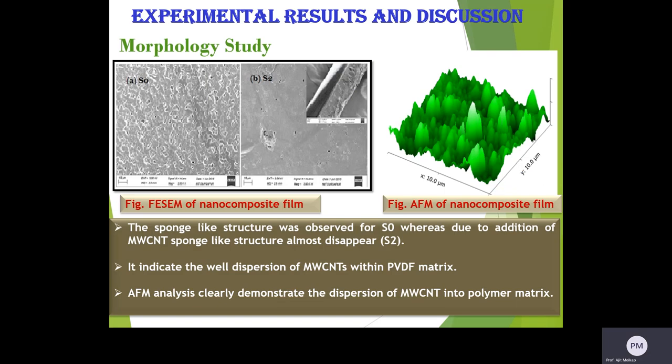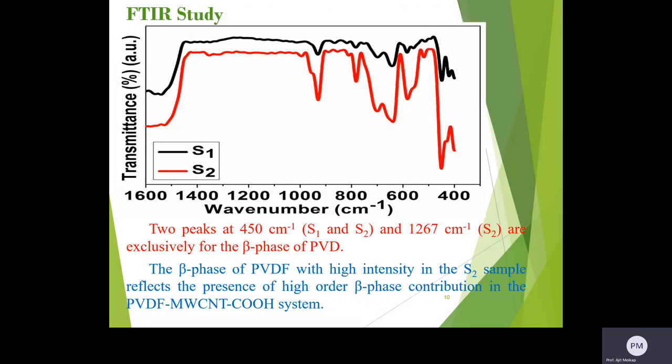Morphologies of the films are described here. The sponge-like structure has been observed for pure PVDF, whereas due to addition of MWCNT, sponge-like structure almost disappeared. AFM analysis clearly demonstrated the dispersion of MWCNT into the polymer matrix.